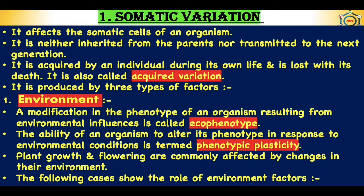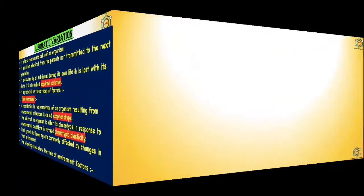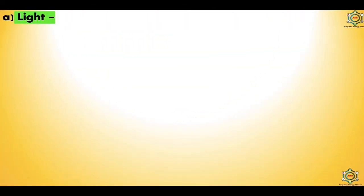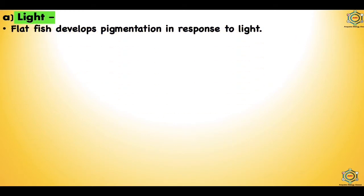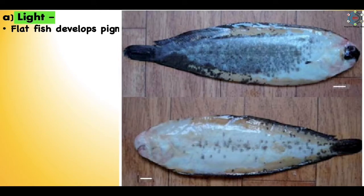Some cases show the role of environmental factors. First is light: a flatfish develops pigmentation in response to light. A newly hatched flatfish has pigmentation and eyes on both sides. The adult fish habitually rests on its left side on the sandy sea floor; gradually its left side loses pigmentation and its left eye moves to the right side. Thus, a flatfish acquires a somatic variation under the influence of light.